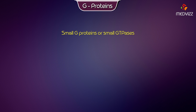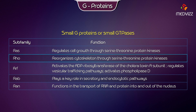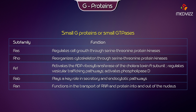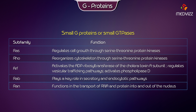Small G-Proteins, or Small GTPases, are organized into subfamilies. The RAS subfamily regulates cell growth through serine and threonine protein kinases. RHO reorganizes the cytoskeleton through serine/threonine protein kinases. ARF activates ADP-ribosyl transferase to the cholera toxin A subunit, regulates vesicular trafficking pathways, and activates phospholipase D. The RAB subfamily plays a key role in secretory and endocytotic pathways. RAN functions in the transport of RNA and protein into and out of the nucleus.